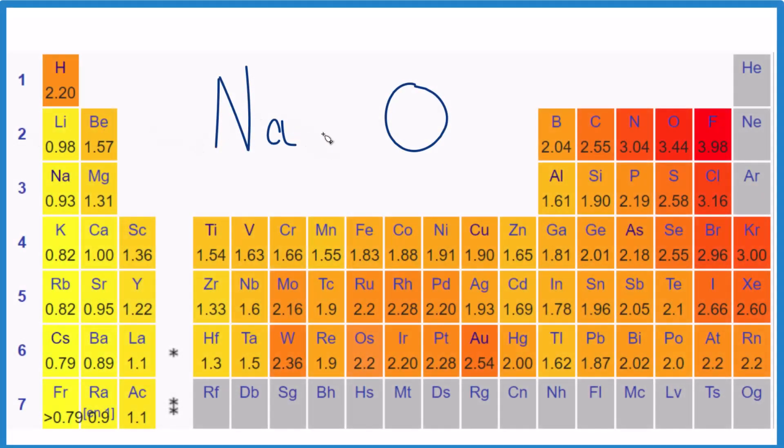If you need to figure out the difference in electronegativity between sodium and oxygen, here's how you do it. On the periodic table, we can see that we have each element with its electronegativity values.